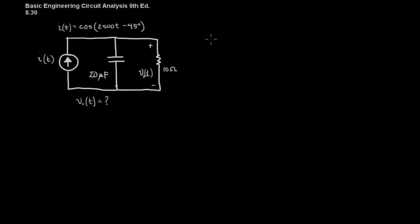Okay, so the first thing we want to do is we want to calculate, we want to convert our source into a phaser. So, if I of t equals the cosine of 2500 t minus 45 degrees, then our amplitude is 1 and our phase shift is negative 45 degrees. So, our phaser, then, is 1 at an angle of negative 45 degrees.